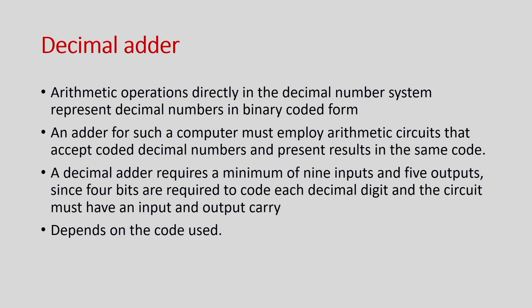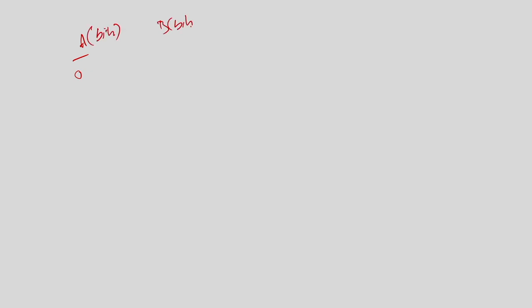So what is a BCD adder or decimal adder? As we discussed earlier, in many cases the decimal numbers 0 to 9 are used. If you add these numbers, your circuit will have 9 inputs because A can be 0 to 9, which is 4 bits, B is also 4 bits, and there can be a carry in. The value of A will be 0000 to 1001, and B value can also be 0000 to 1001, and carry can be 0 or 1.